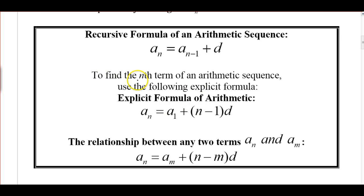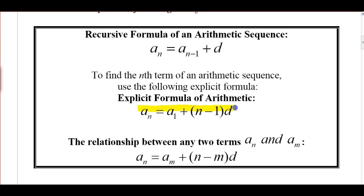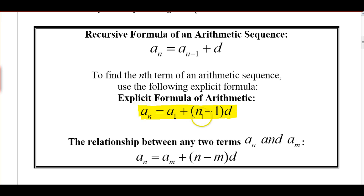If we want an explicit formula to find the nth term of an arithmetic sequence, we'll use the following explicit formula. Any value a sub n is going to be the first term plus the common difference n minus 1 times. So if I'm on the first term and I want to go to the fifth term, I have to add the common difference 5 minus 1, or 4 times. This is a general relationship for the nth term based on the first term.